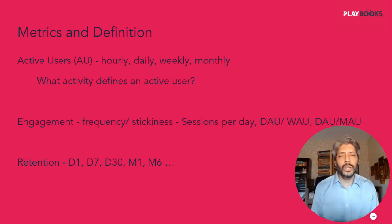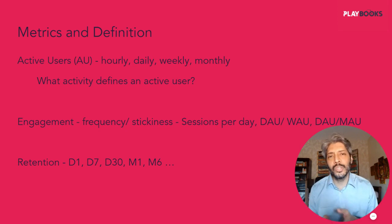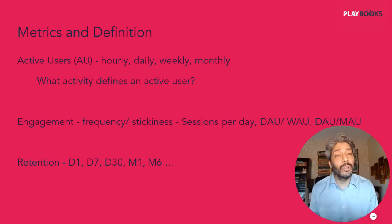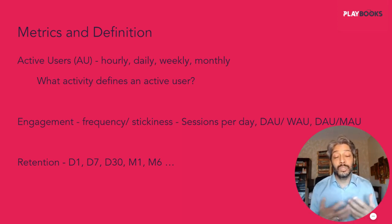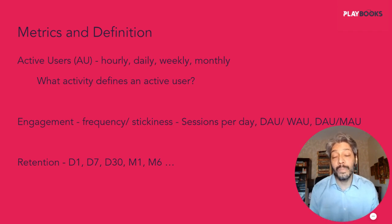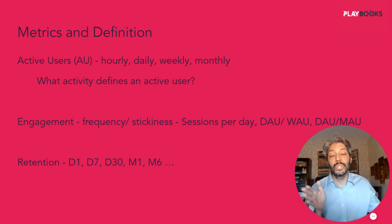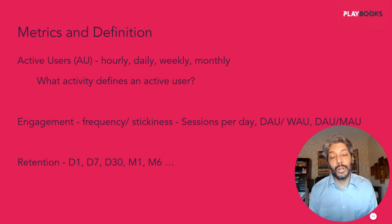In a lot of products you would measure D1, D7, D30. In many cases you would measure week-over-week retention: W0, W1, W2. And sometimes in social products you also measure month-over-month retention because you want the lifetime of the user to be much, much longer. But what about users who install the app tomorrow? This is where the concept of cohorts comes in.